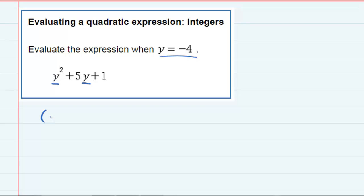I'm going to replace the first one with negative 4, so that would be negative 4 squared. And then I'm going to replace the second one also with negative 4, but I'm going to put it in parentheses. And then we have plus 1.